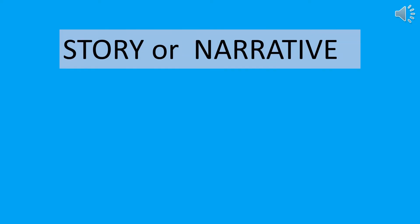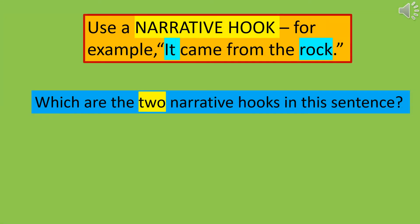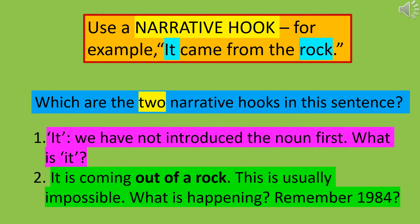Story or narrative — how do we make them engaging? Use a narrative hook. For example: 'It came from the rock.' Which are the two narrative hooks in this sentence? Number one: we start by referring to 'it' — it's a pronoun, we've not introduced the noun first, so what is it? Secondly, it's coming out of a rock, which is usually impossible. What's happening? Remember 1984?